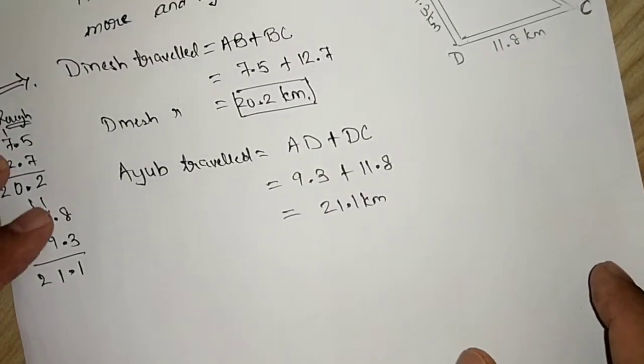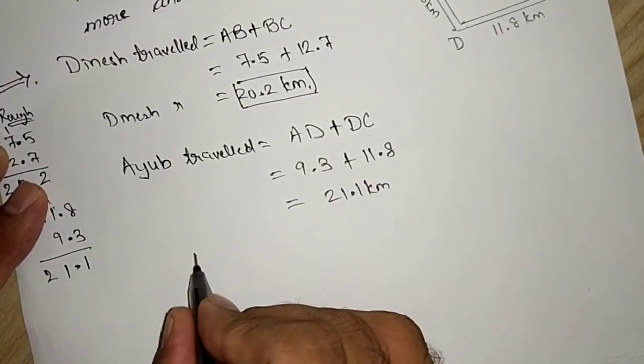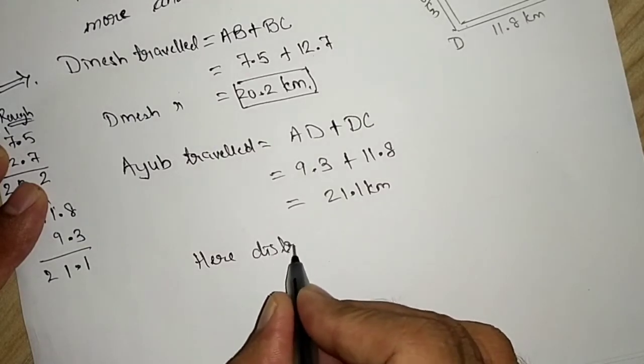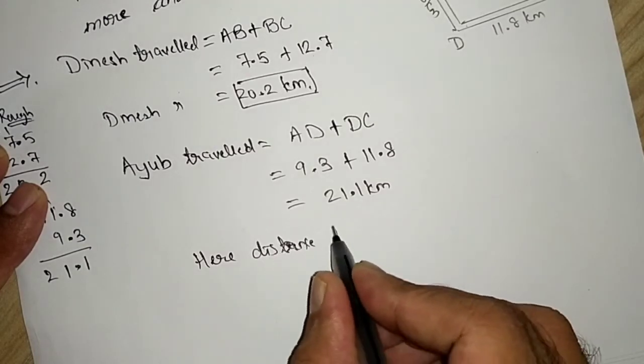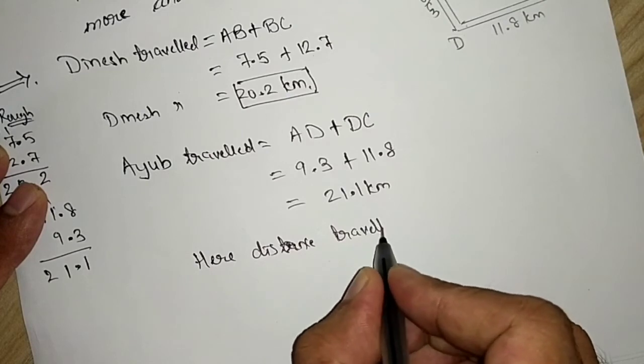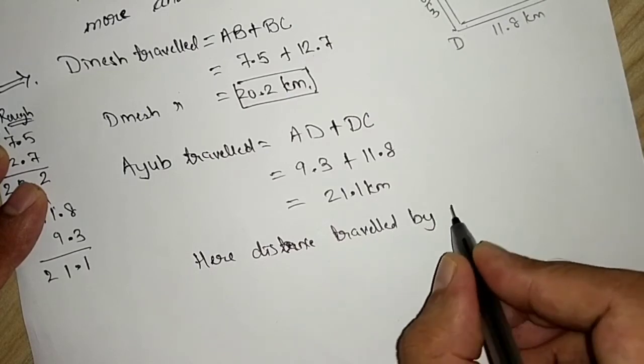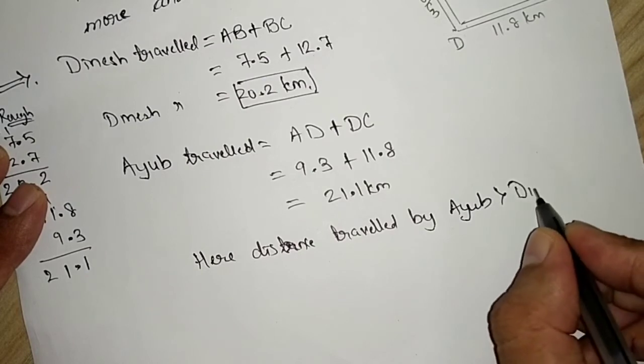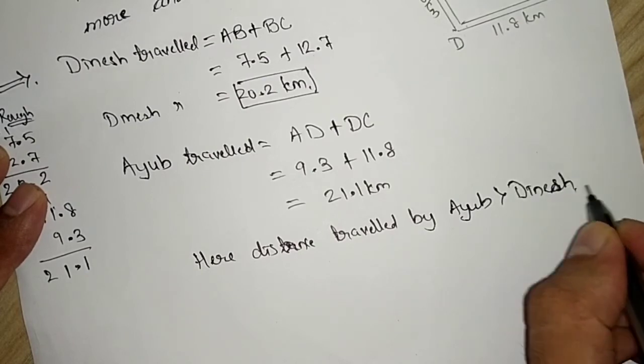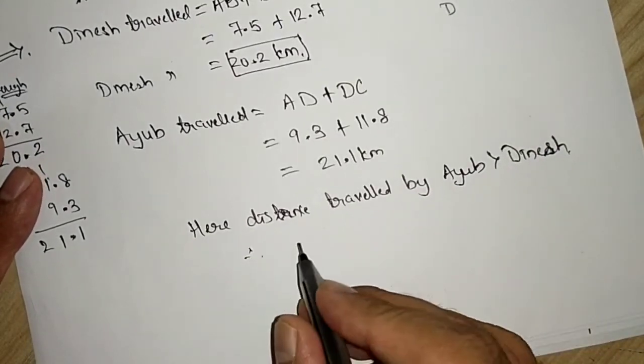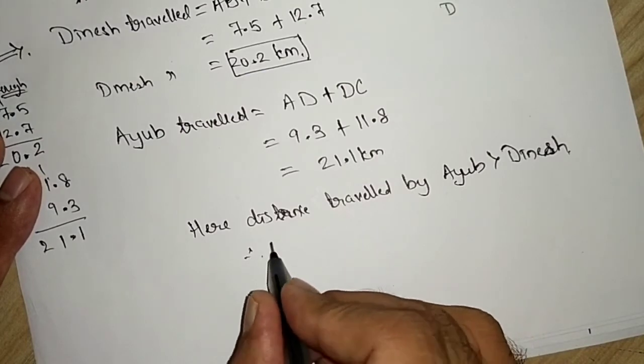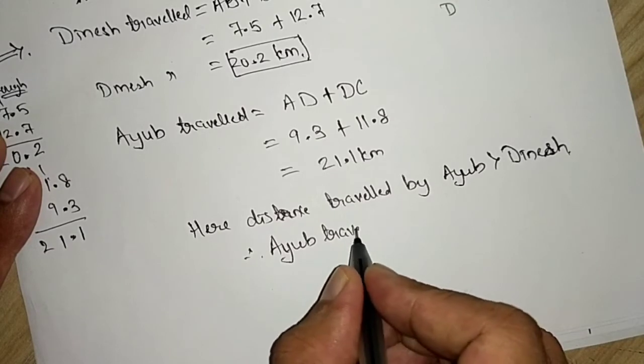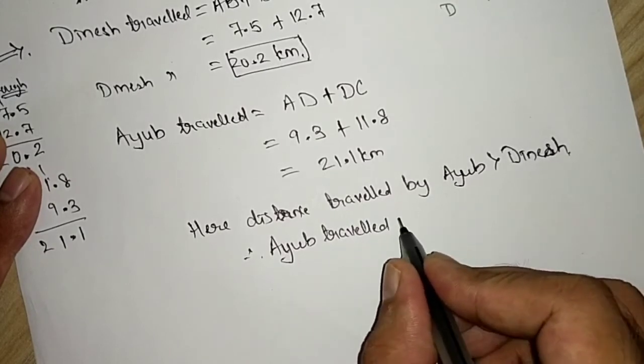Now, they have asked us, who travelled more? We will write here, distance travelled by Ayub is greater than Dinesh. Therefore, Ayub travelled more.